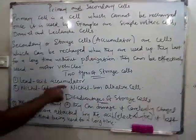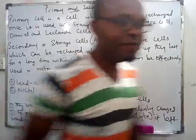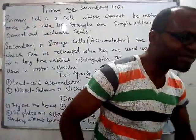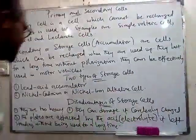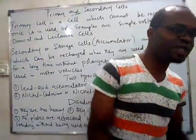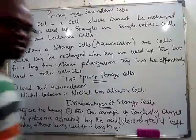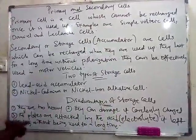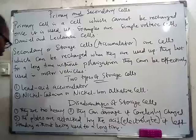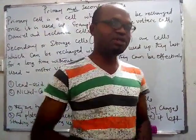What are the disadvantages of these accumulators? They are too heavy — have you carried the battery of a car? It's very heavy, unlike the simple cells you can hold in your hand. The battery you use for torchlights, when it discharges, you throw it away because it's a primary cell. For secondary cells, when they discharge you can recharge them. However, they can be damaged if carelessly charged. The plates are also attacked by acid electrolytes if left without being used.